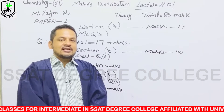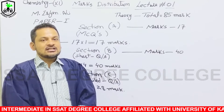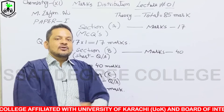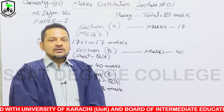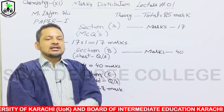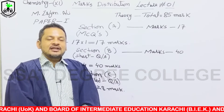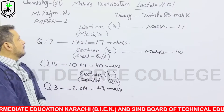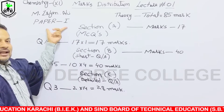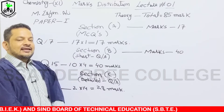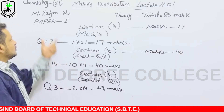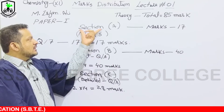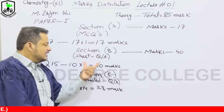इस तरह Chemistry Part 1 में 100 Marks बन जाते हैं। Second Year में भी 85 Marks का Theory Examination और 15 Marks का Practical Exam होगा। Paper 1 First Year का है और Paper 2 Second Year का। Paper 1 की Marks Distribution में तीन sections होते हैं — Section A, Section B, Section C।